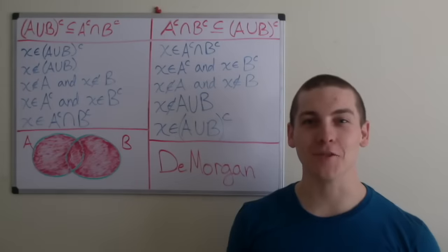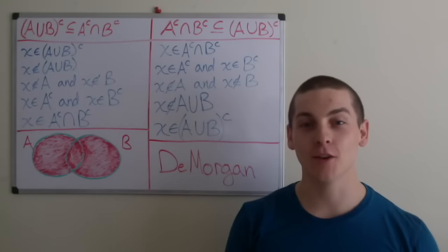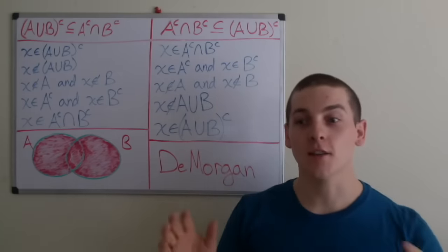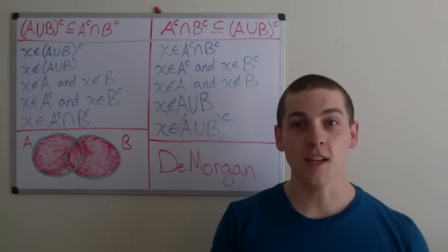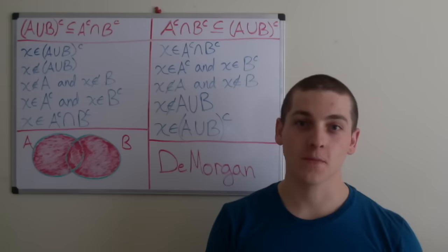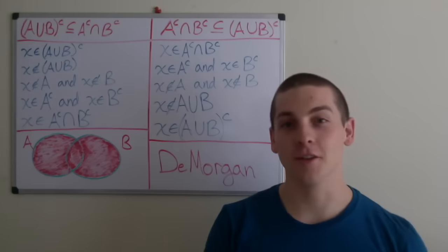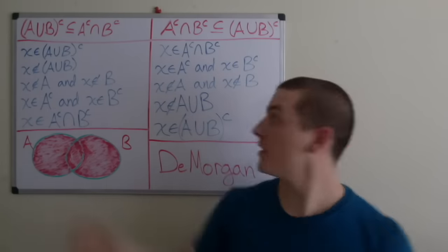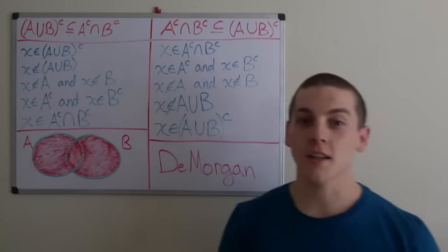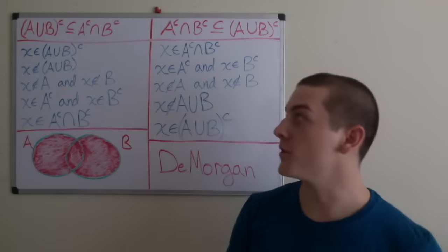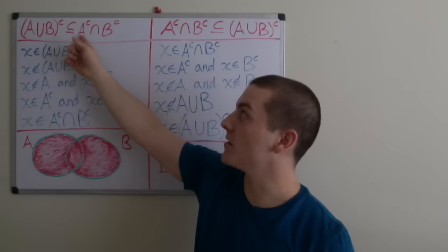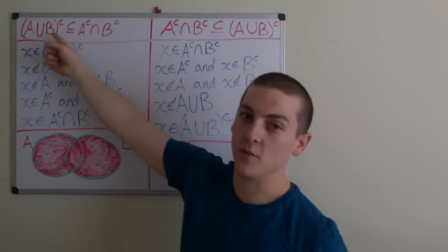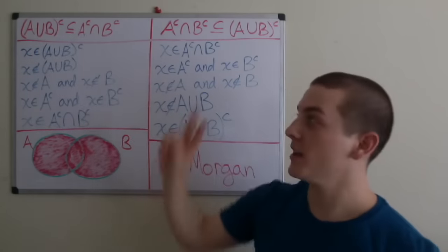In this video, I'll be introducing the very last algebraic law of sets, known as De Morgan's Law. De Morgan's Law was founded by Augustus De Morgan, and it states that the complement of a union is the intersection of the complements, or that the complement of the intersection is the union of the complements. So we're going to prove that the complement of the union of A and B is in fact equal to the complement of A intersected with the complement of B. To do this, we have to show that the complement of A union B is a subset of A complement intersection B complement, and vice versa.